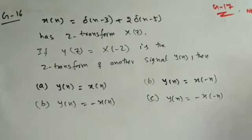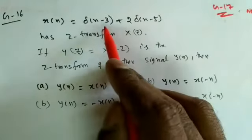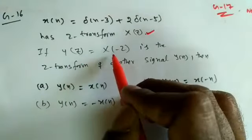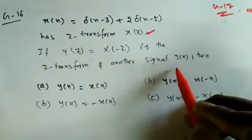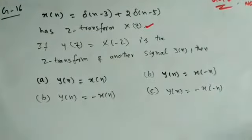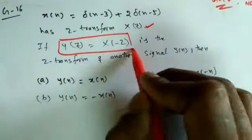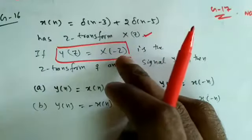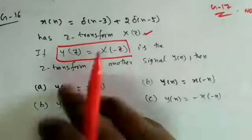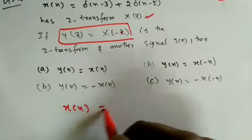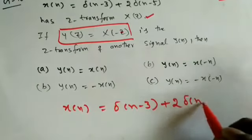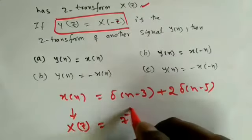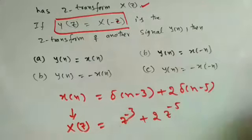This is the GATE 2016 one-mark question. Given x(n) = δ(n−3) + 2·δ(n−5), with Z-transform X(z). The relation is: if Y(z) = X(−z) is the Z-transform of another signal, we need to find the relationship between y(n) and x(n). Now x(n) = δ(n−3) + 2·δ(n−5), and by the time-shifting property, X(z) = z^(−3) + 2·z^(−5).